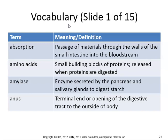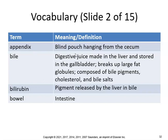Here's some vocabulary. Absorption is the passage of materials through the walls of the small intestine into the bloodstream. Amino acids are small building blocks of proteins released when proteins are digested. Amylase is an enzyme secreted by the pancreas and salivary glands to digest starch. The anus is the terminal opening of the digestive tract. The appendix is a blind pouch hanging from the cecum. Bile is a digestive juice made in the liver and stored in the gallbladder — it breaks up large fat globules and is composed of bile pigments, cholesterol, and bile salts. Bilirubin is a pigment released by the liver in the bile.